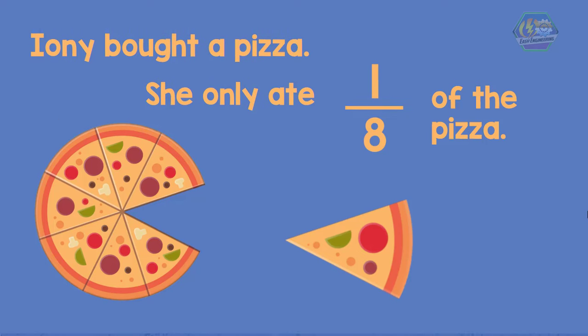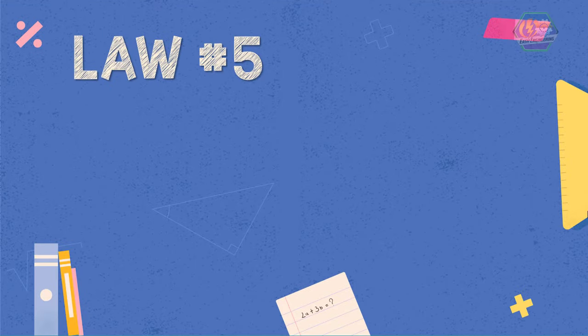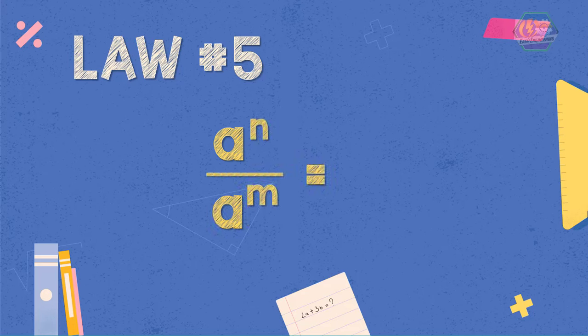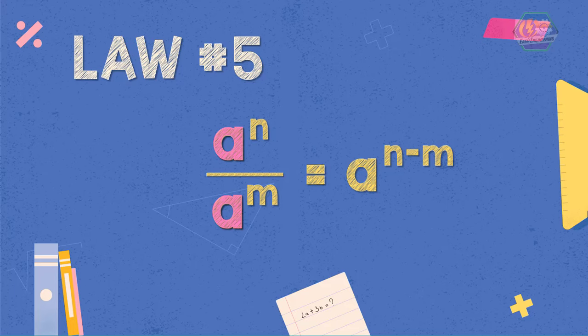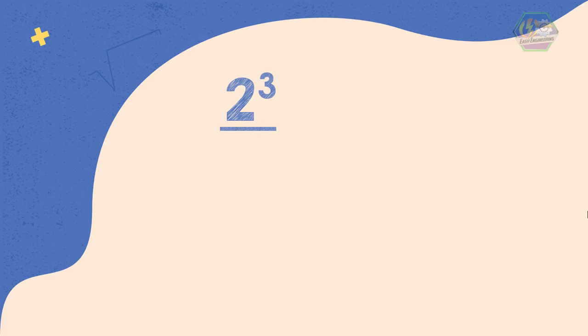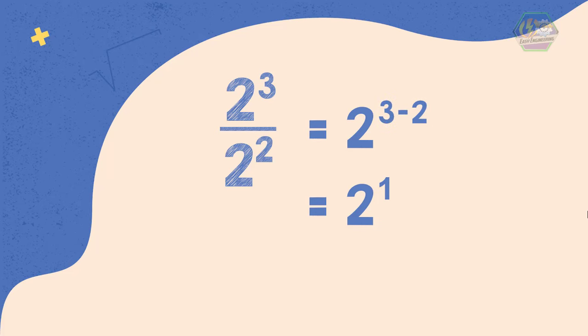Let's proceed to the last law — Law 5. A raised to the power of N divided by A raised to the power of M is equal to A raised to the power of N minus M, where A is a real number and not equal to 0, and N and M are positive integers. This law means that if the numerator and denominator have the same base but different exponents, you can just copy the base and subtract the exponent of the denominator from the exponent of the numerator. For example, 2 raised to the power of 3 divided by 2 raised to the power of 2 is equal to 2 raised to the power of 3 minus 2. So the answer is 2.